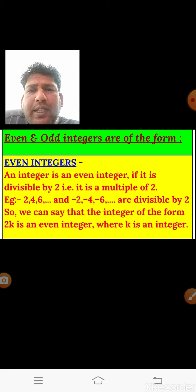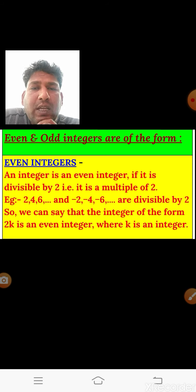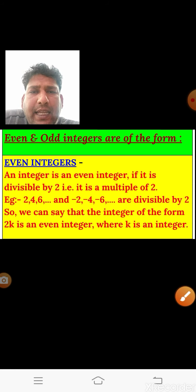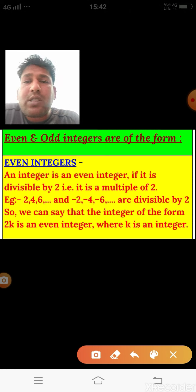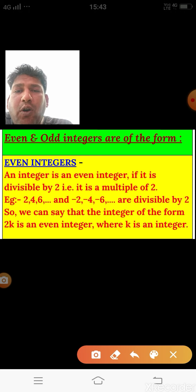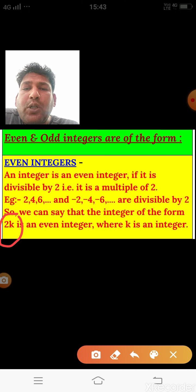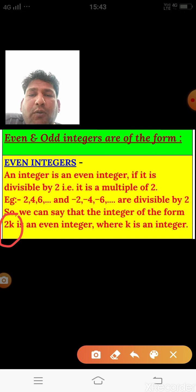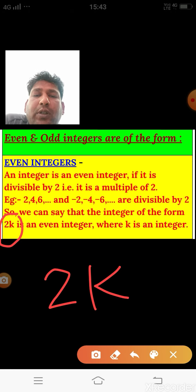Now let us go through the concept of even and odd integers. Even numbers are multiples of 2 and odd numbers are not divisible by 2. In class 10th, all integers of the form 2k are even integers, where k is an integer. If you take any integer and multiply by 2, you always get an even integer. All even integers are of the form 2k.